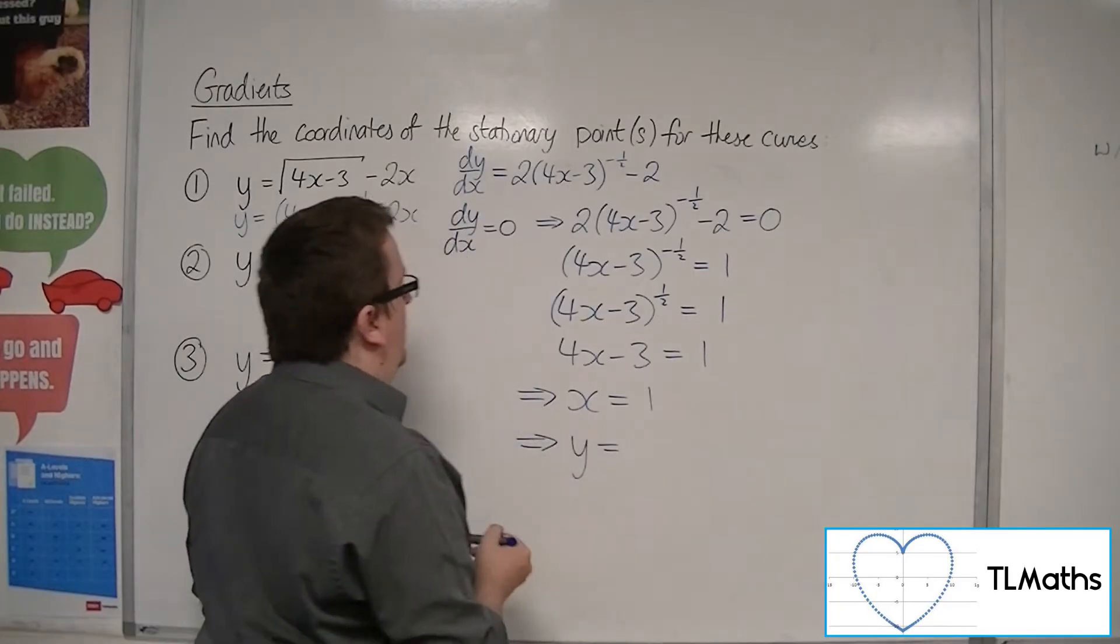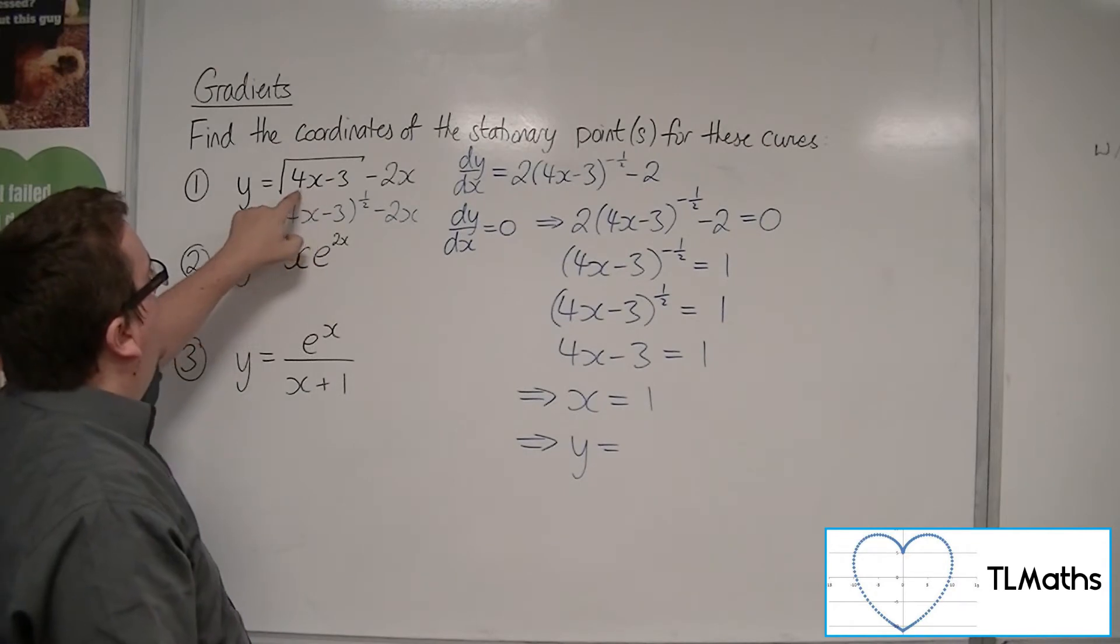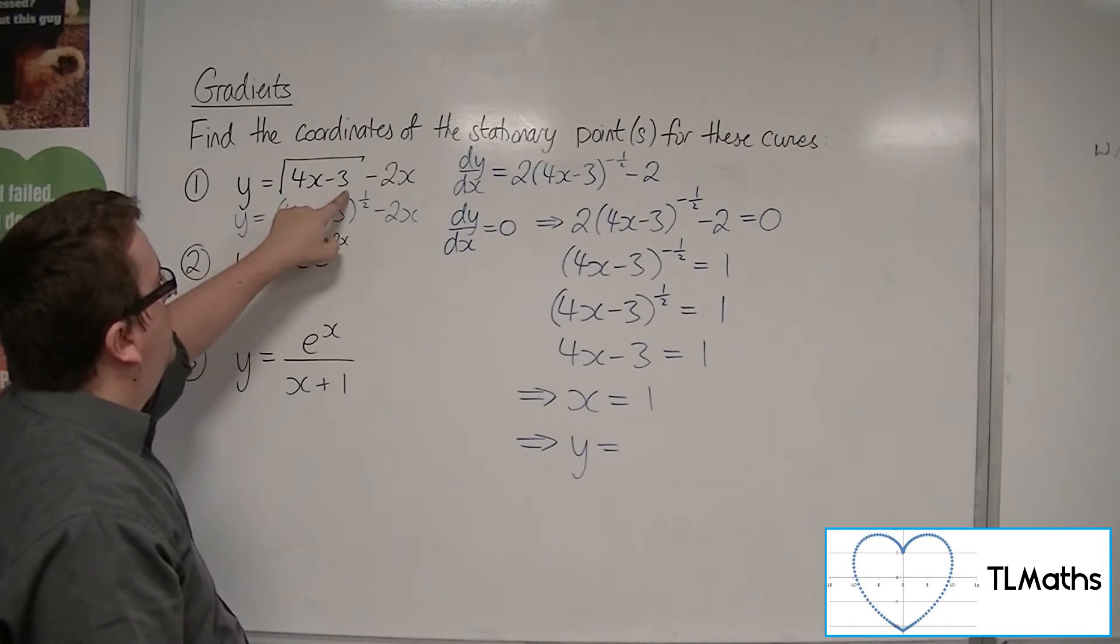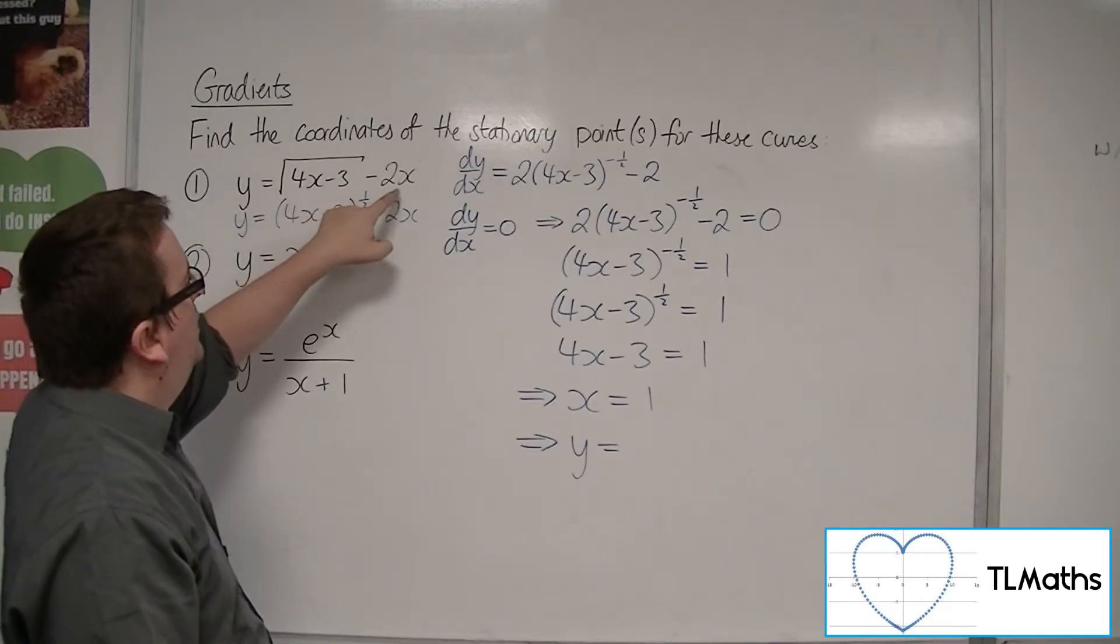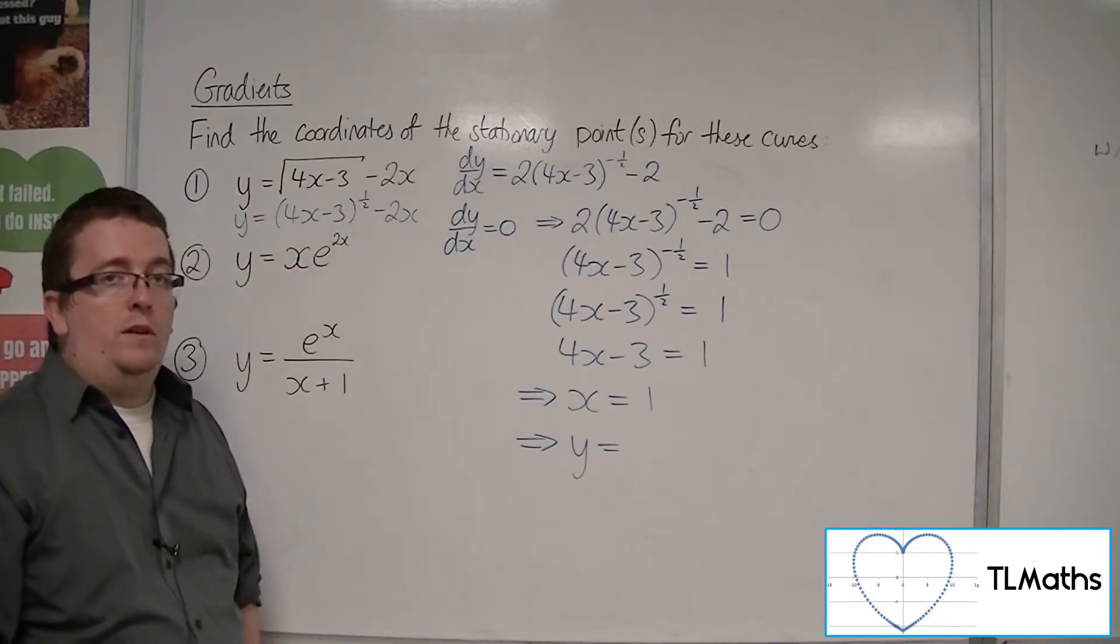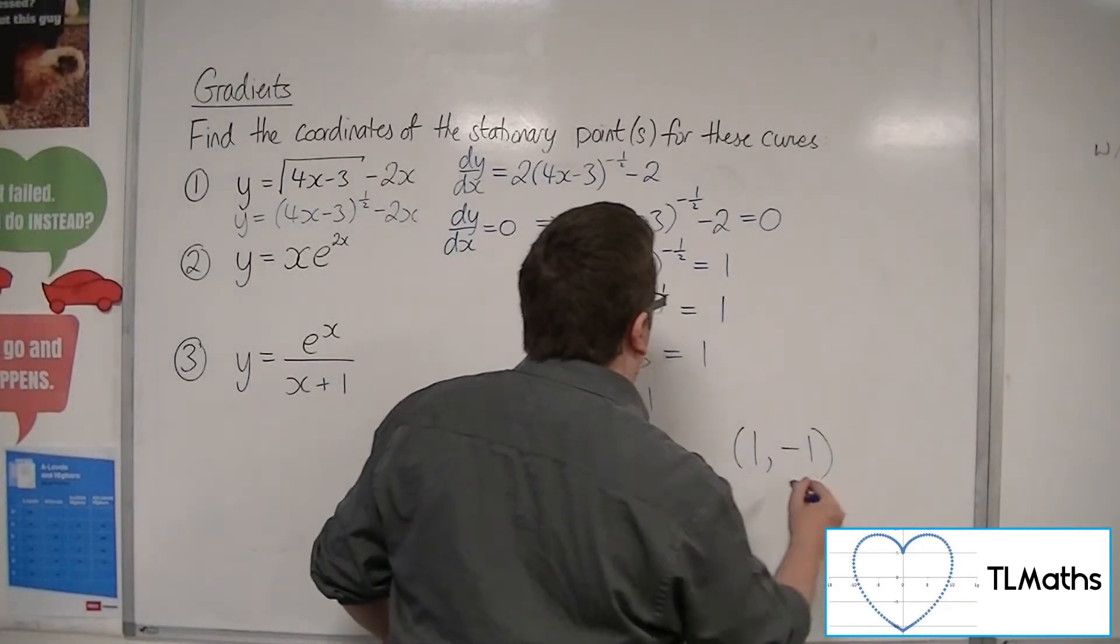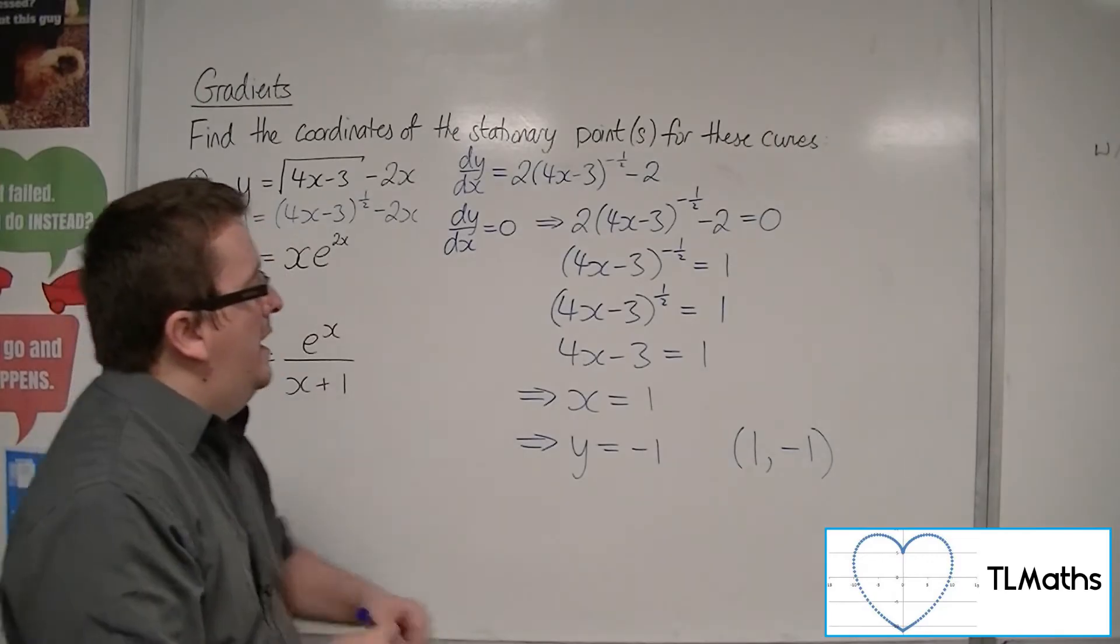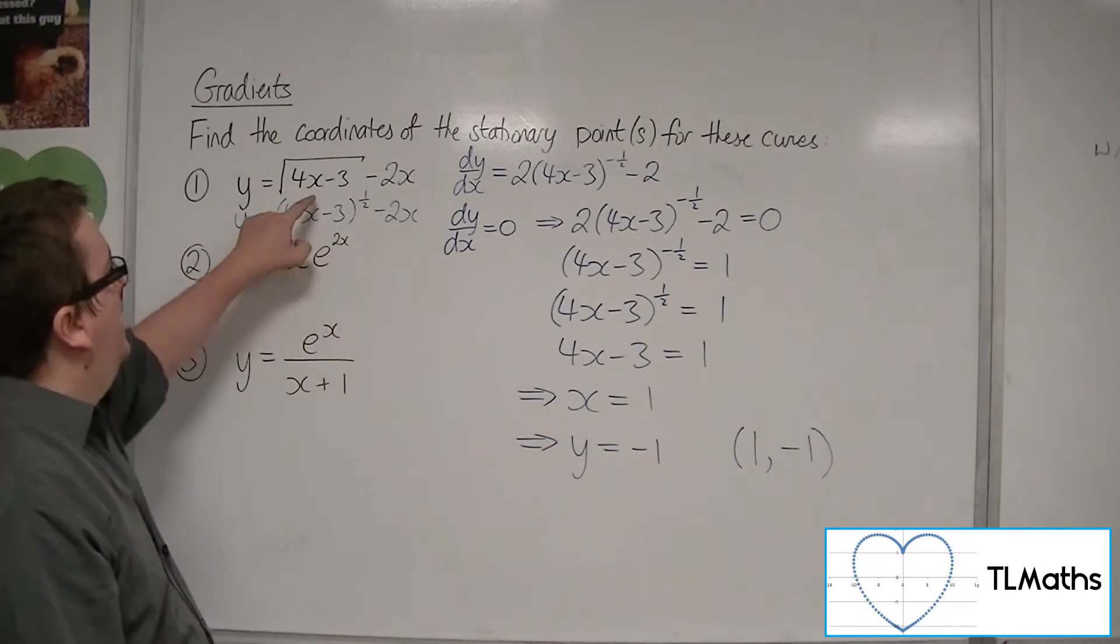So if I then substitute that into the y equation that I originally had, I get 4(1) - 3, so 1. The square root of 1 is just 1. 1 - 2(1) is -1. So (1, -1), that's the coordinates of the only stationary point for that curve.